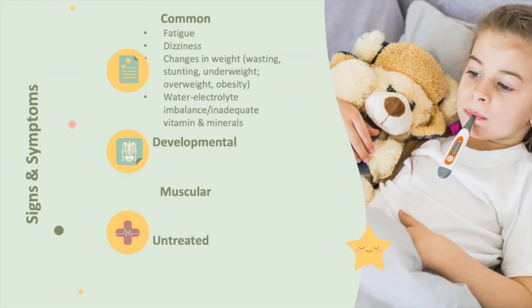The signs and symptoms of malnutrition. The most common clinical presentations are fatigue, dizziness, and changes in weight. Wasting — these children come in visibly emaciated, as their body is not gaining weight. Stunting refers to delays in growth. Children may be underweight, overweight, or already at the obesity scale.